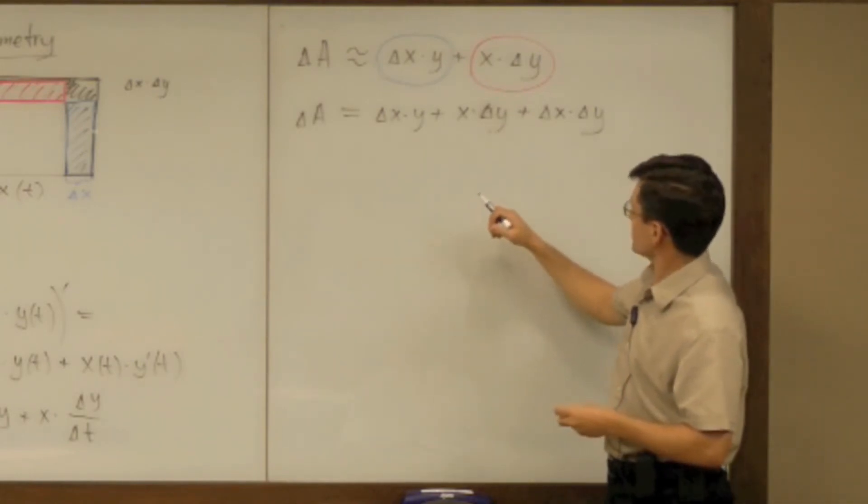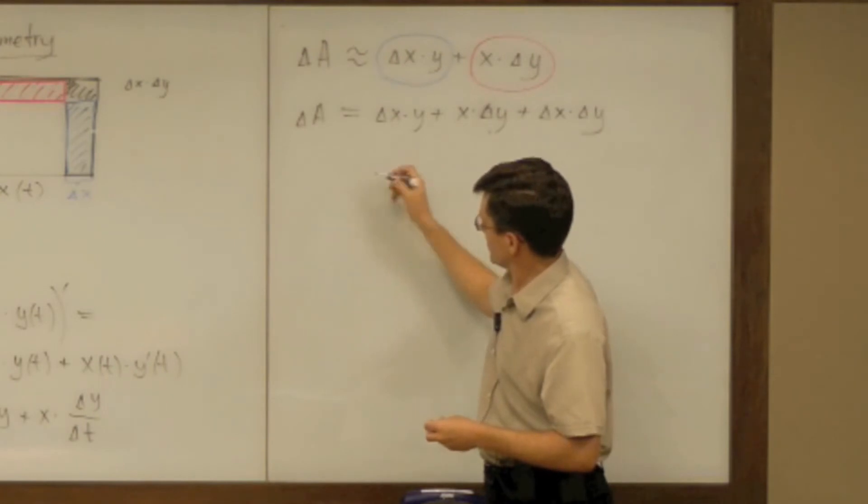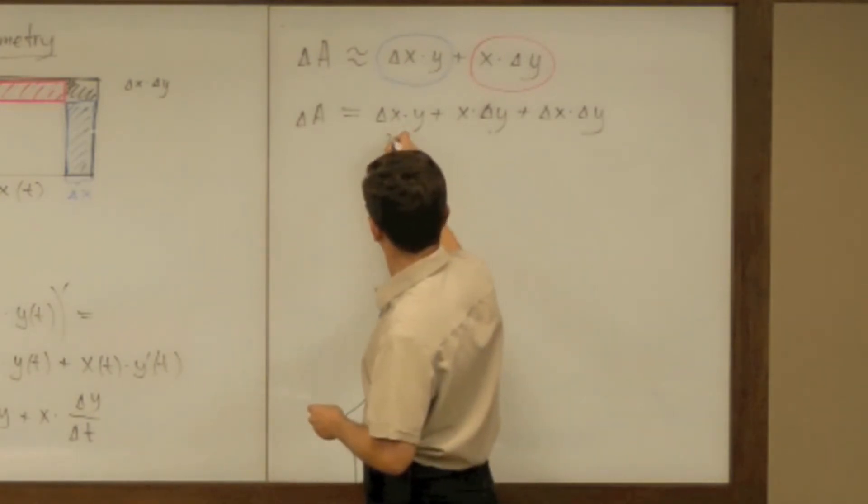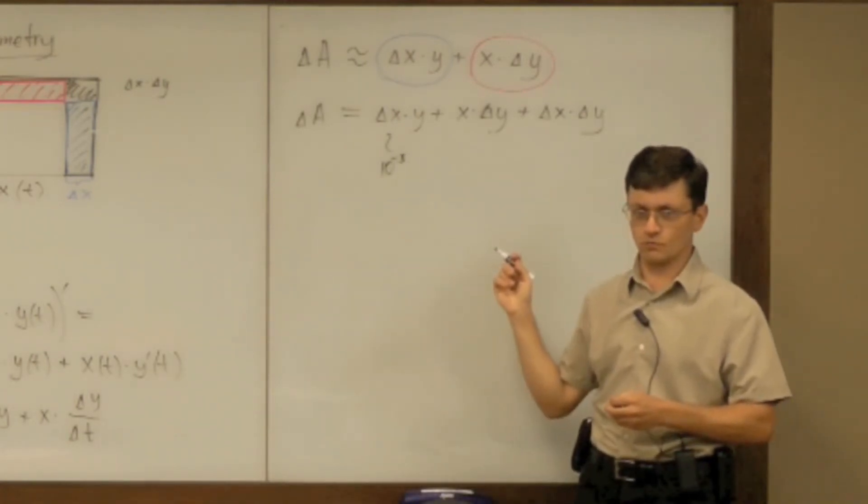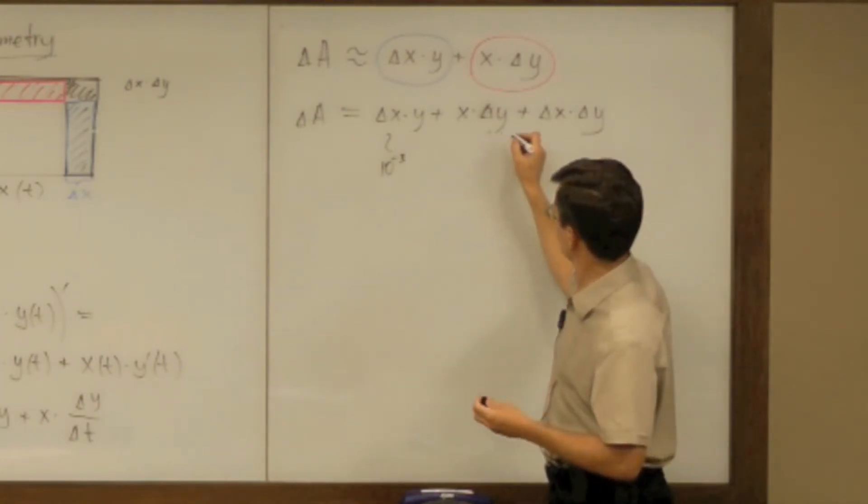So in other words if you make delta x small like 10 to the power of negative 3, is that small for you? 1 over 1000. Is it convincing? Small number. You make delta y small, 10 to the power of negative 4.